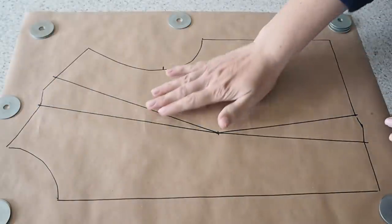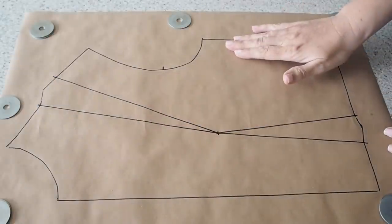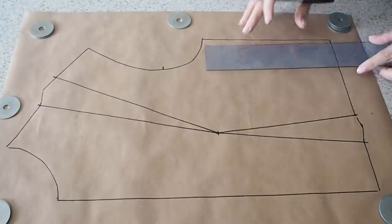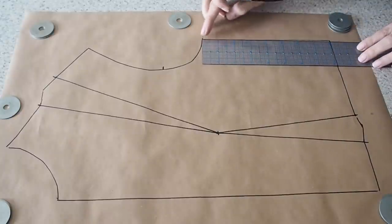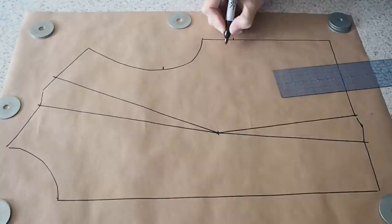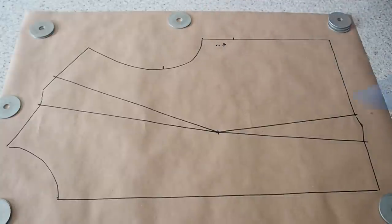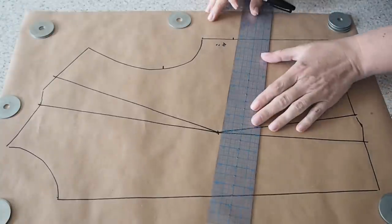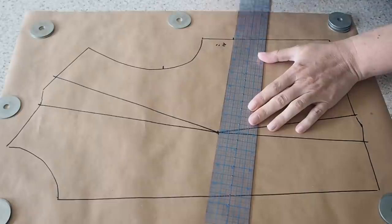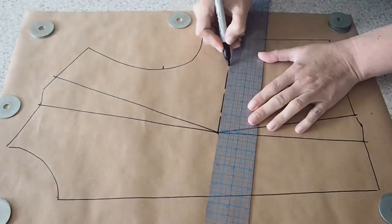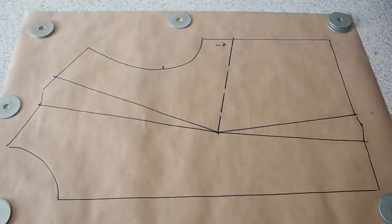So the first technique here is to reposition a dart. For this example, I'm going to move the shoulder dart to the side seam. So measuring down from the underarm point two inches, giving myself a little dot and then drawing in my new dart position from the apex to that dot.